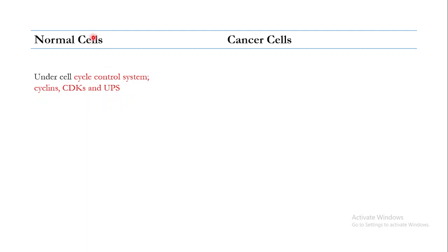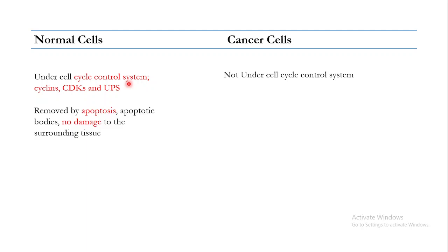So for normal cells, being under the control system means they will grow, divide, and die. When you talk about cancer cells, they are not under the cell cycle control system. What this means is that the control system loses its control, and when control is lost, these cells divide abnormally.